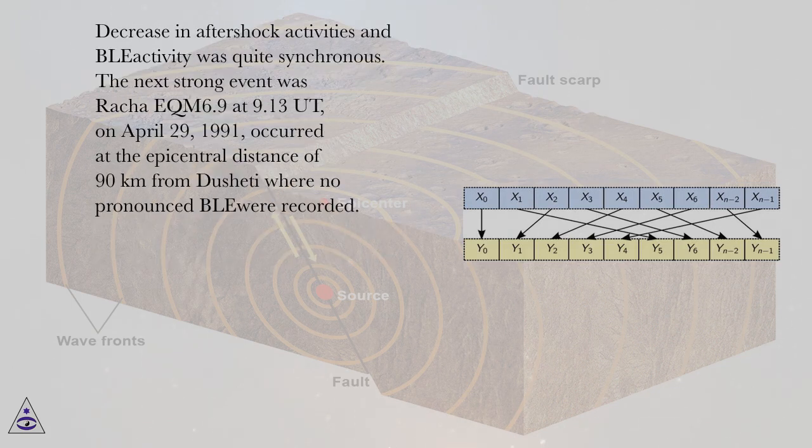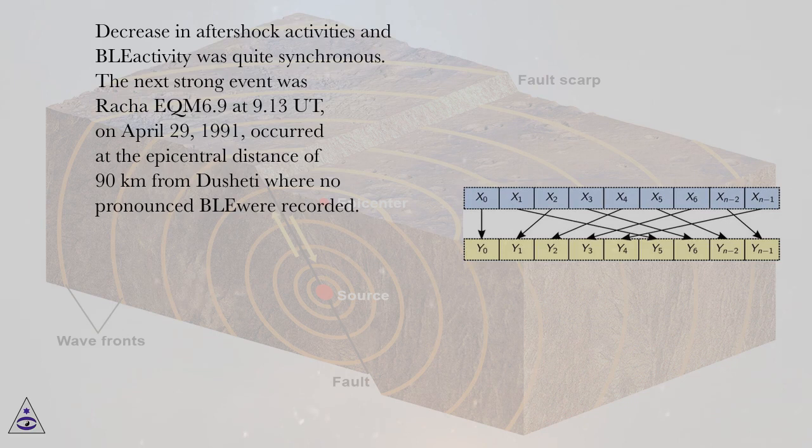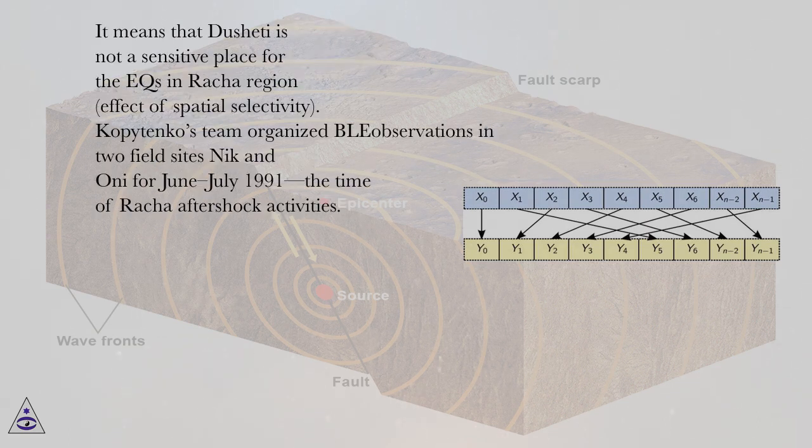Decrease in aftershock activities and BLE activity was quite synchronous. The next strong event was Racha EQ M6.9 at 9.13 UT, on April 29, 1991, occurred at the epicentral distance of 90 kilometers from Dusheti where no pronounced BLE recorded. It means that Dusheti is not a sensitive place for the EQs in Racha region, effective spatial selectivity.